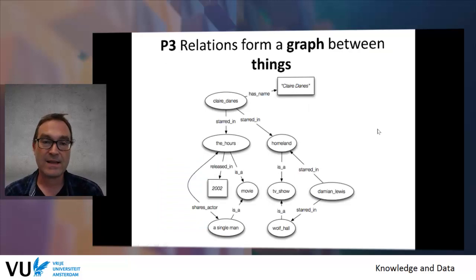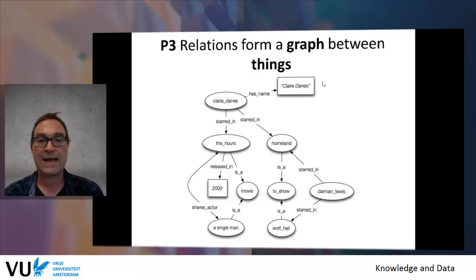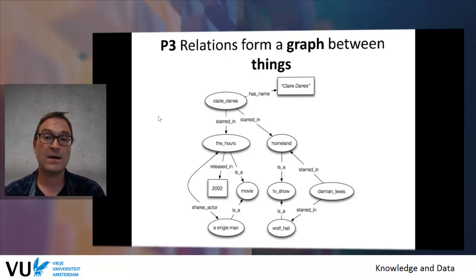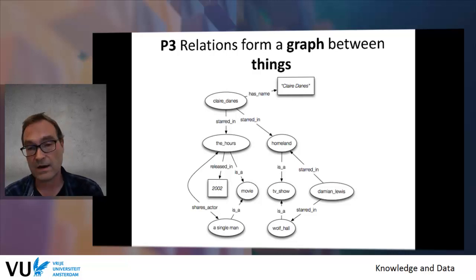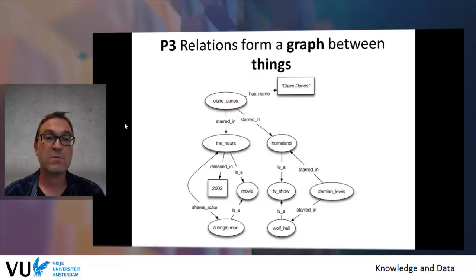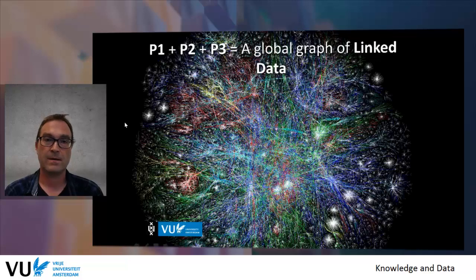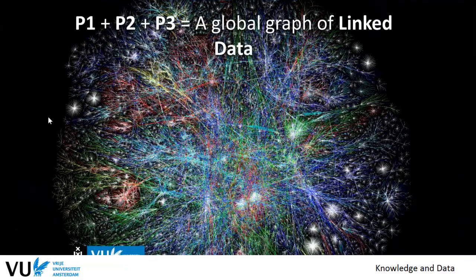Now I can make statements about other things — whether that movie, The Single Man, Damien Lewis, or Claire Danes — whether this information lives on my own machine or somewhere on the web doesn't matter, because each of the nodes is now identified by a URI, or nowadays called an IRI, which is a unique identifier on the web. That's very powerful. Once we do this, we really create on the web infrastructure a global graph of linked data, and this global graph is a knowledge graph — the one we discussed last week.